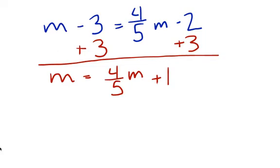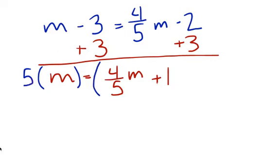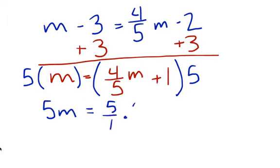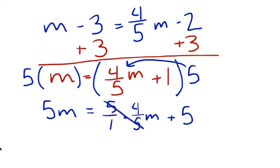Remember what I said on the last slide — you're going to look through and find out what is my common denominator of all these fractions. I only have one, which is 5. So I'm going to multiply each side by 5. When I multiply 5 times m, I get 5m. And on this side, 5 times 4 fifths m gives me 4m once the 5s cancel each other out, plus 5 times 1 which is just 5. So you're left with 5m equals 4m plus 5.